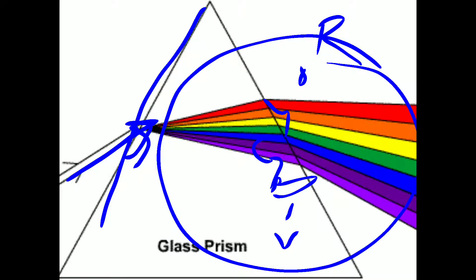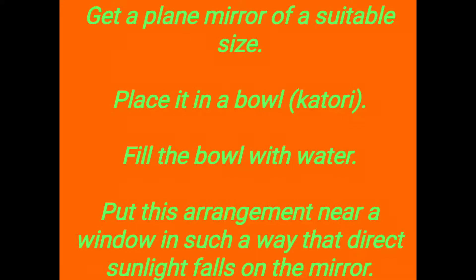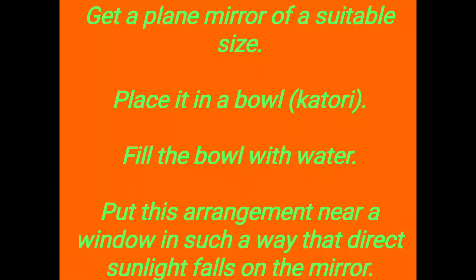Naturally you will also see this in rainbow formation, where seven colors are visible. Now we have to do an experiment to demonstrate the splitting of white light or dispersion of light.